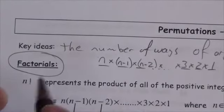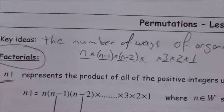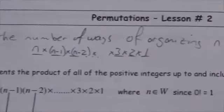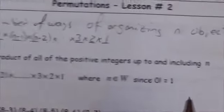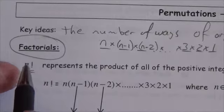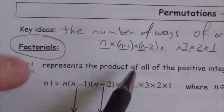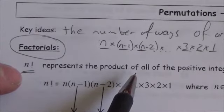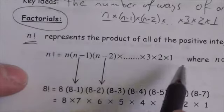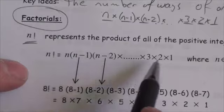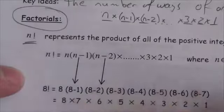n factorial — written as n with an exclamation mark — refers to the product of all the positive integers up to and including n. Starting with n and going down to one, every whole number value is a factor. So n factorial means n times (n minus 1) times (n minus 2), all the way down. That is the number of ways of organizing n objects.